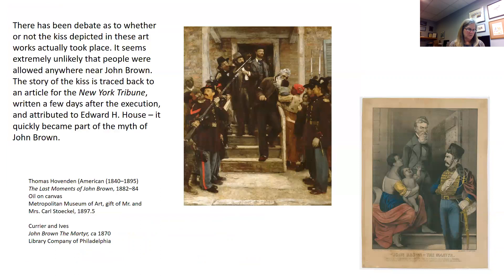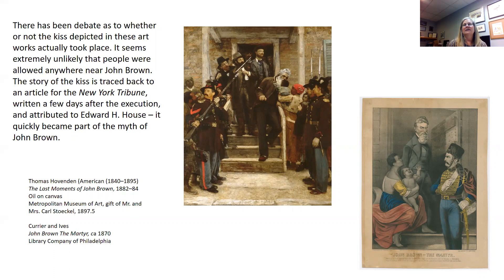Walker's print portrays a particular moment in Brown's life — when he's being sent to the gallows after the raid. There supposedly was an incident where a slave mother held up her baby to John Brown for a kiss, and this was reported in the New York Tribune. A number of artists picked up on this incident, two rather close to the time: Thomas Hovenden and Currier and Ives. Brown is shown fully clothed, very calm, as a stern hero, reflecting that at this point many people felt that he was a martyr and hero.